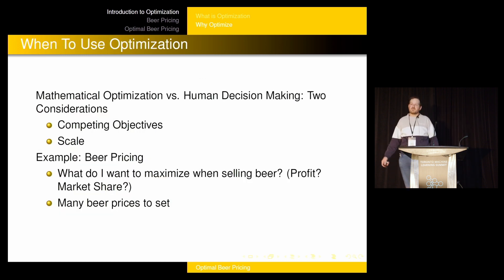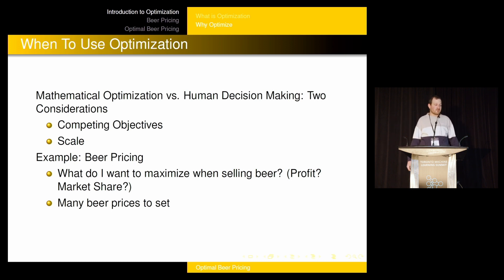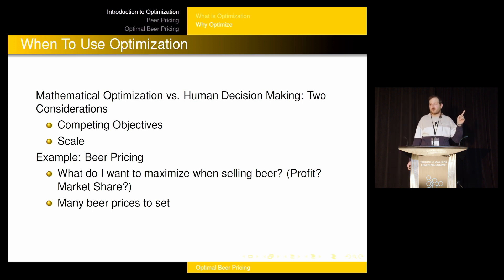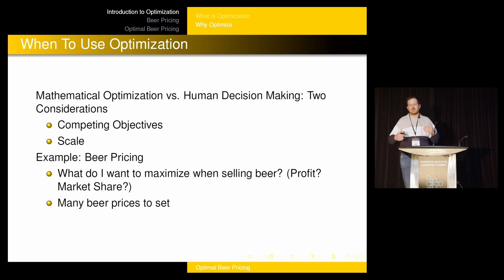When should you use optimization? You might consider it versus having a human make decisions. In the case of optimal pricing, should I use optimization to price my products or should a human just decide? A couple of considerations: if there are competing objectives, it gets harder and harder for a human to make those decisions. There's a trade-off between revenue and market share in pricing, and that's an example of why that trade-off makes it harder for humans.